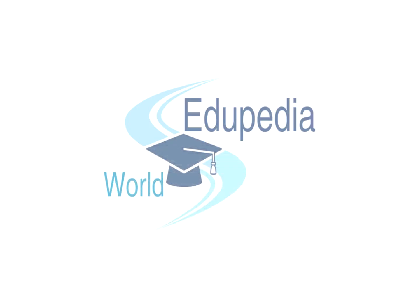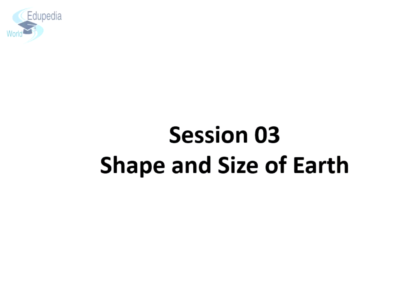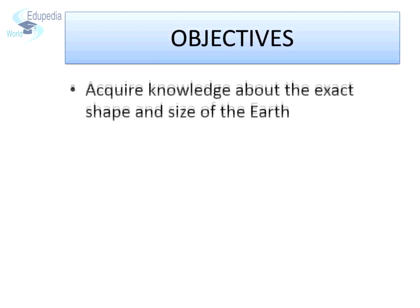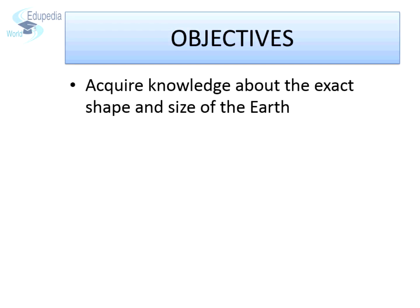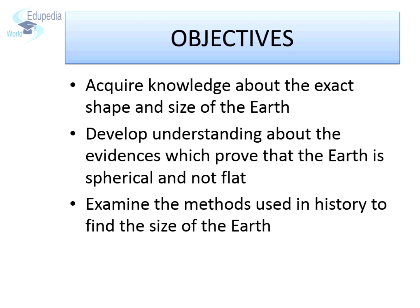Welcome all and thanks for watching Aeropedia world videos. This is Vikas Patil. This is the third session of the chapter Formation of Earth. In this session we are going to explore in depth about the shape and size of Earth, and achieve the following objectives: acquire knowledge about the exact shape and size of the Earth, develop understanding about the evidences which prove that the Earth is spherical in shape, and examine the methods used in history to find the size of the Earth.